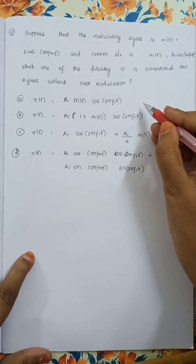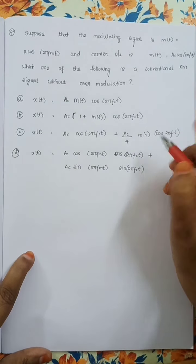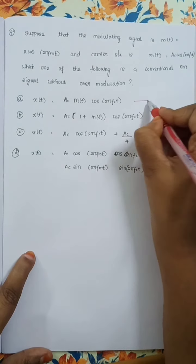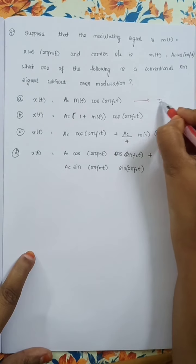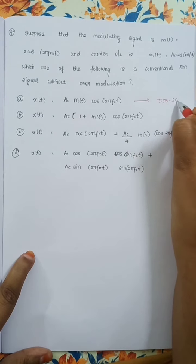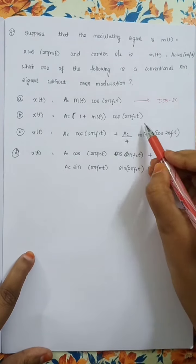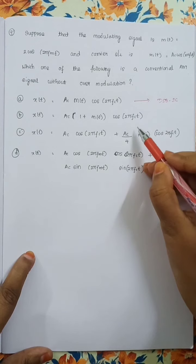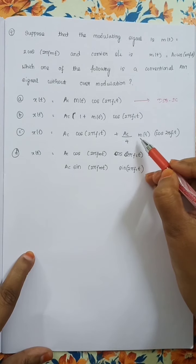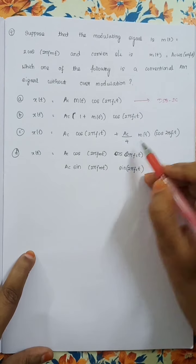Options A and D do not represent a conventional AM because they represent a DSB-SC signal. So options B and C represent conventional AM.